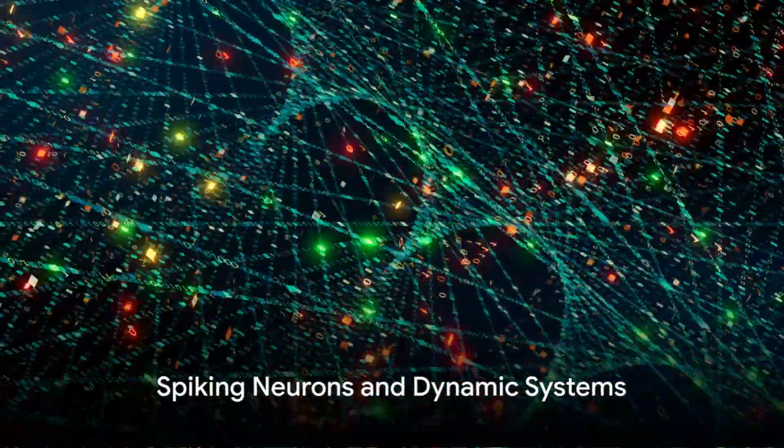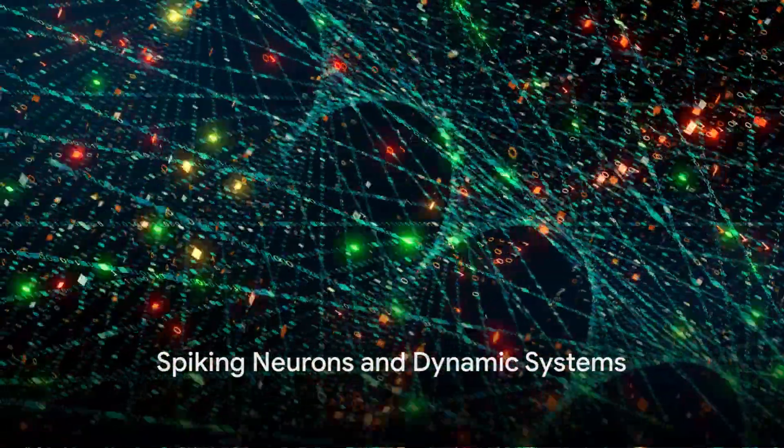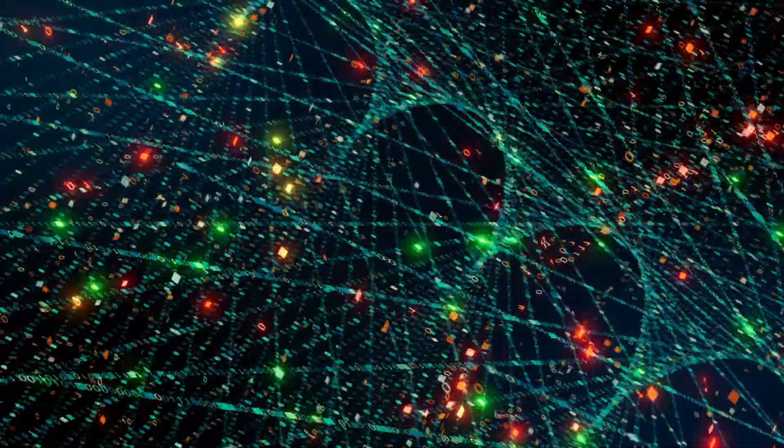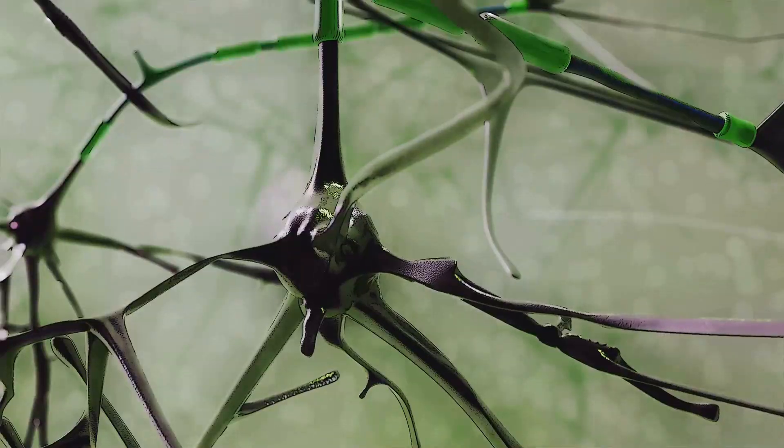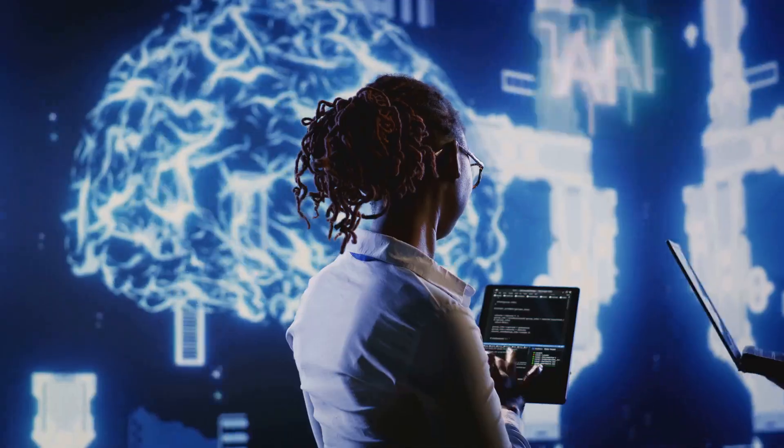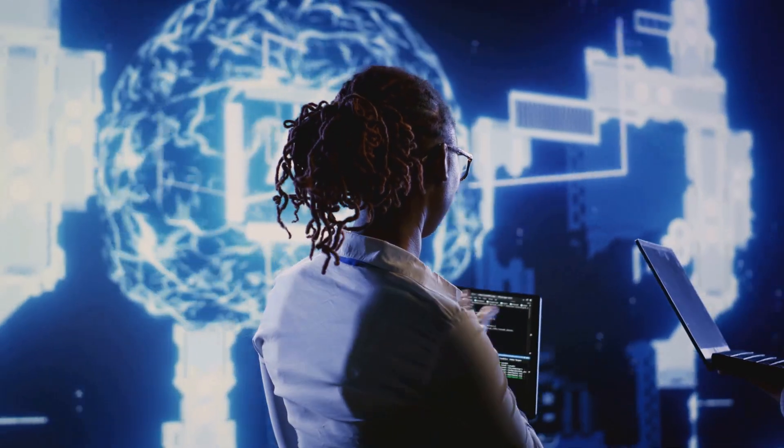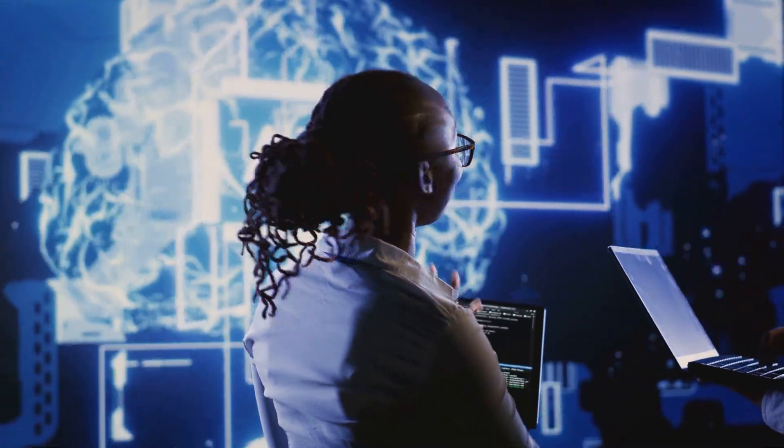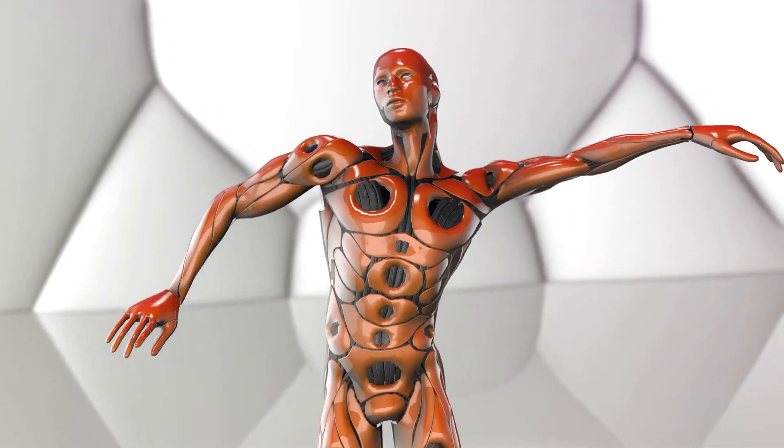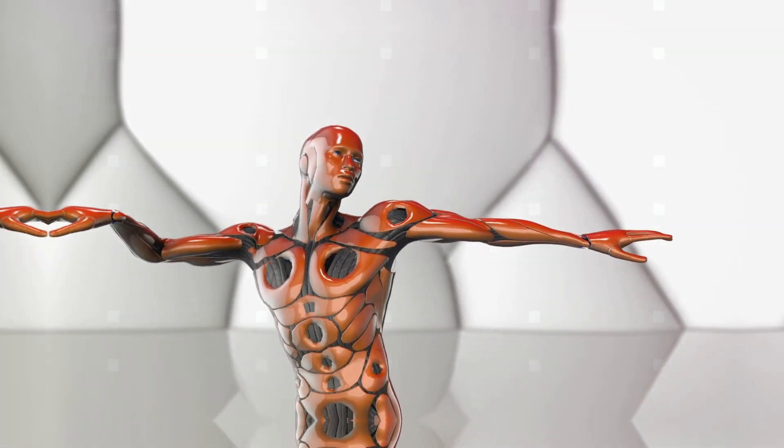But how does this translate to actual computing hardware? Traditional computers operate on the binary system, with bits that are either 0 or 1. In contrast, neuromorphic systems use something called spiking neurons. These artificial neurons don't just switch on or off, they generate spikes of electrical activity similar to how neurons in the brain fire. This allows for a much more dynamic, adaptable system.